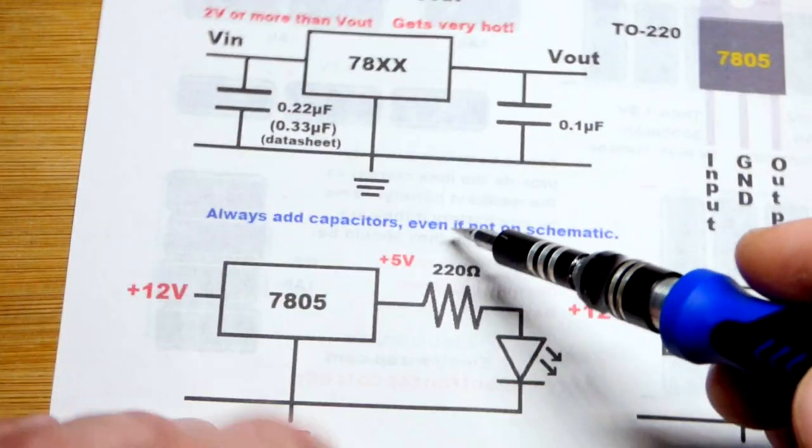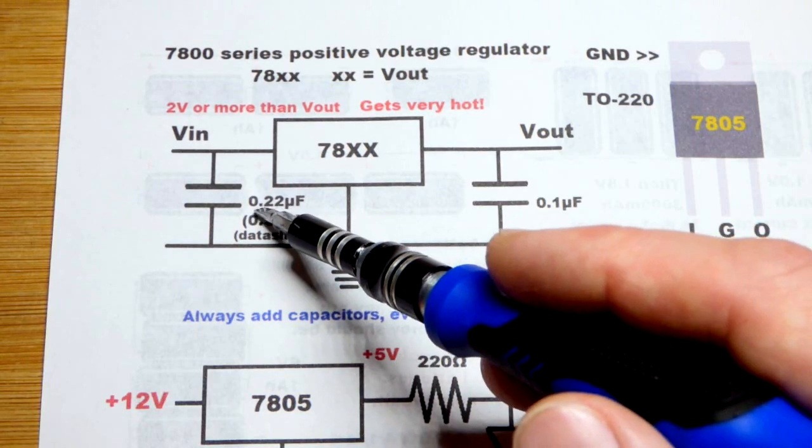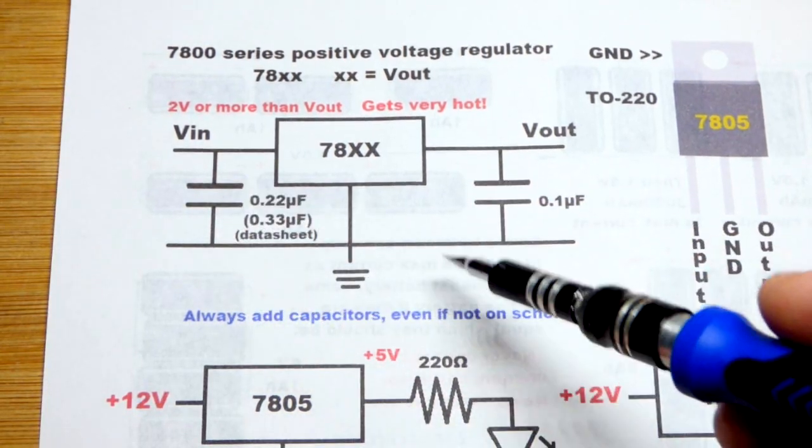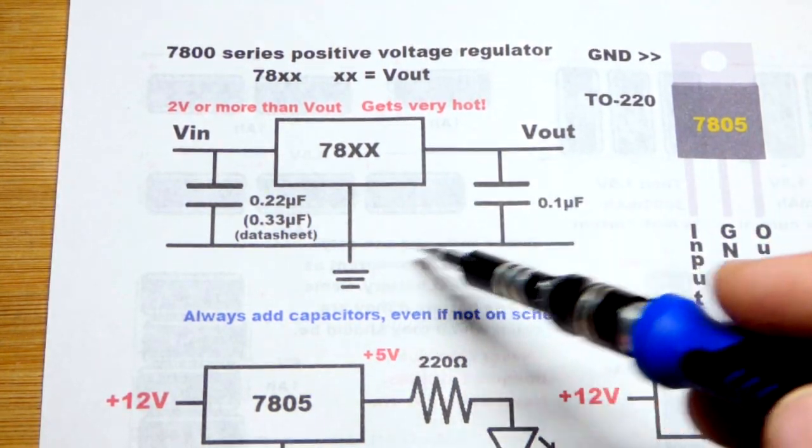Now the data sheet also shows these capacitors. You should add them even if you don't see them in the schematic. Data sheet says 0.33 microfarad, but I have 0.22 microfarad, seems to work. That's from the input pin to ground and then the output pin to ground, 0.1 microfarad is what they say on the data sheet.